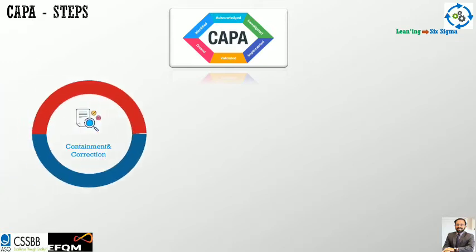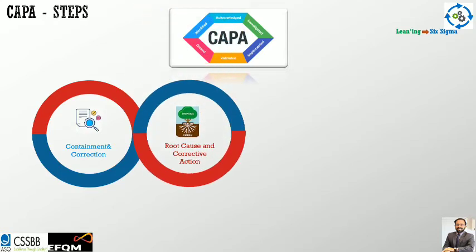Looking specifically at the pharma industry — containment and correction. Why containment? Because damage control has to be initiated. For example, if somebody is bleeding, you first need to stop the bleeding — wound dressing, as we say. So first you contain; then correction is initiated. Second would be root cause and corrective action — you go back and find out why a particular mistake occurred, then fix it.